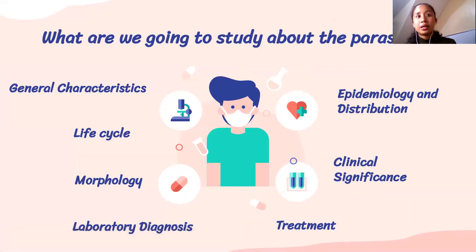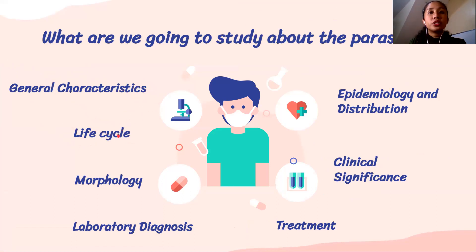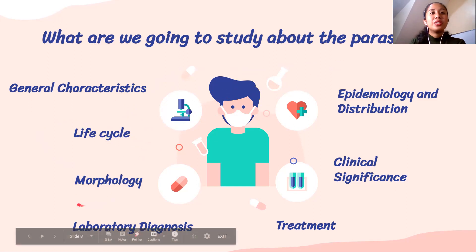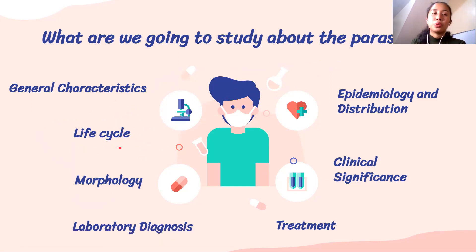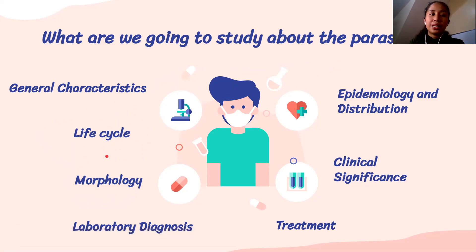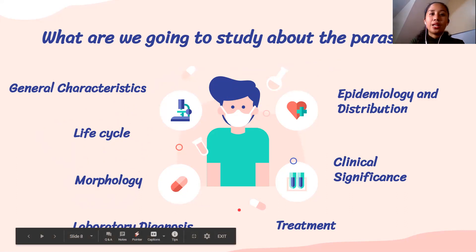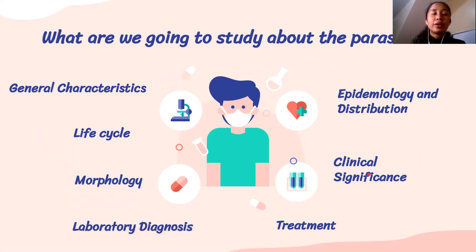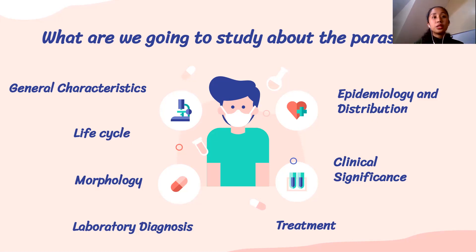What are we going to study about parasites? The flow starting from nematodes: we will know their general characteristics, life cycle — the young stage, teenager stage, adult stage — and their hosts. Then morphology: shape and size. How to diagnose it, the treatment, clinical significance, diseases it causes, and epidemiology and distribution. Knowing where a patient has been can be a great clue in diagnosing parasite type.